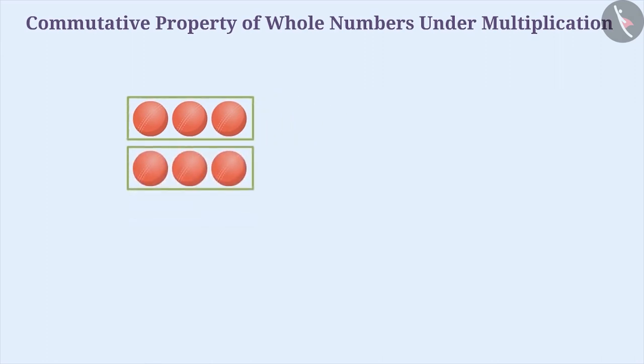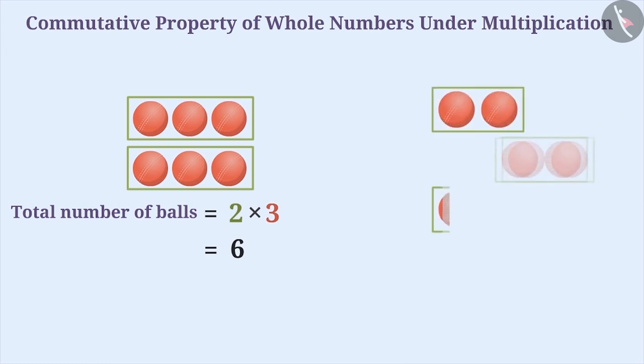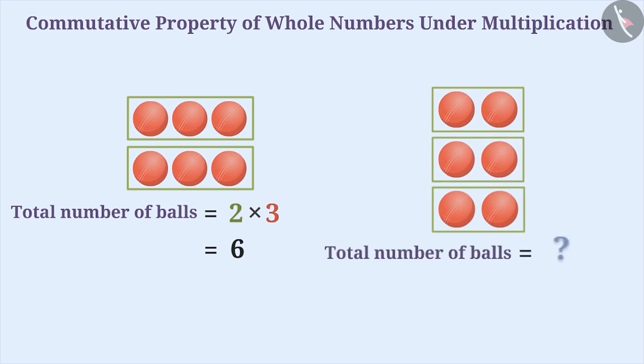Now let's talk about multiplication. If we make two rows of three balls each, then the total number of balls can be obtained by multiplying two and three. The product is six. However, if we change the order by making three rows of two balls each, then do we get the total number of balls same as before?